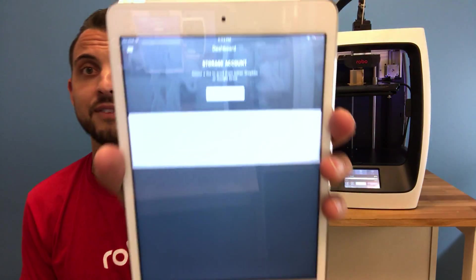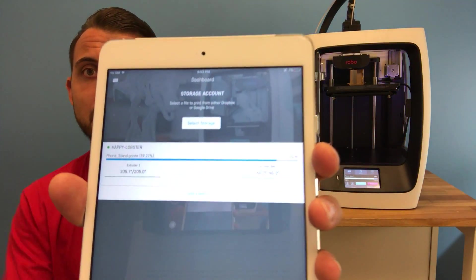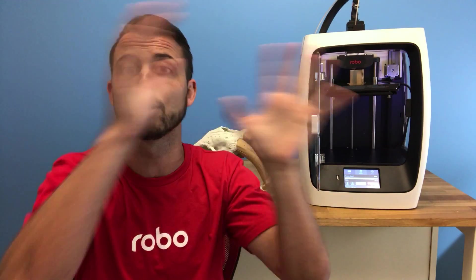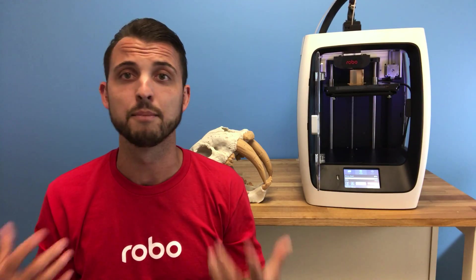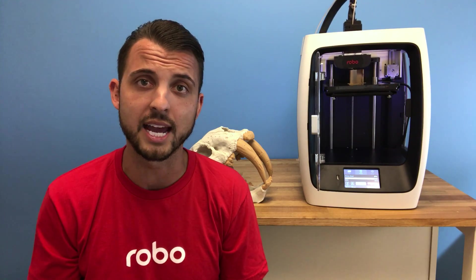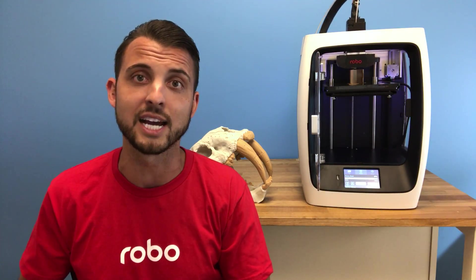We also have an iPhone app that's available in the iOS store called the Robo app. It's connected to the printer over here. This allows you to download files to a cloud library, send them to the machine directly over Wi-Fi, monitor your print, it'll give you notifications and updates. It's a really cool thing to have when you're getting into 3D printing and we're integrating more and more models into the actual app so you can just one-click print.